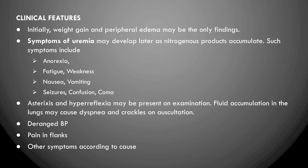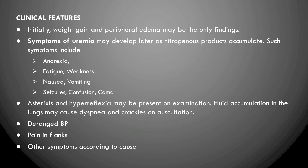Uremic symptoms include anorexia, vomiting, fatigue, weakness, nausea, seizures, confusion, and coma. Asterixis — flapping tremors — and hyperreflexia are also present. Fluid accumulation in the lungs causes dyspnea and crackles on auscultation due to pleural effusions. Hemodynamic instability causes deranged blood pressure, with the effective circulating blood volume decreasing and the RAAS autoregulation disrupted by kidney injury.